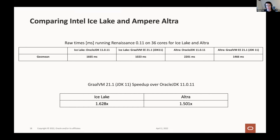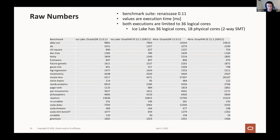On average, GraalVM is about 60% faster than C2 on Intel and 50% faster than C2 on ARM. The main takeaway is that on ARM, as is the case on Intel, GraalVM offers substantial performance benefits over C2. Here are the raw numbers in the slides if you want to look at them later.